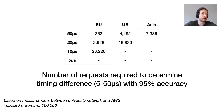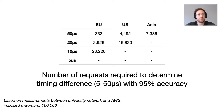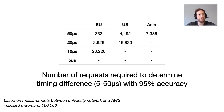We explored exactly how many requests an attacker required based on the connection between our university network and a server located at AWS. We imposed a maximum of 100,000 requests. We saw that a timing difference between two processing tasks with a difference of 50 microseconds required 333 requests in order to determine this, between our university server and a server located in the EU. We see that the smaller the timing difference becomes, the more requests are required — so for 10 microseconds it's already up to 23,220 requests for the EU.